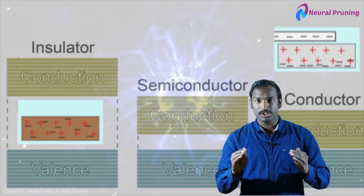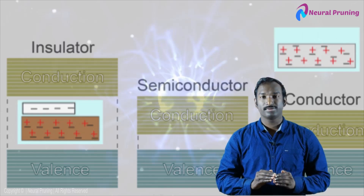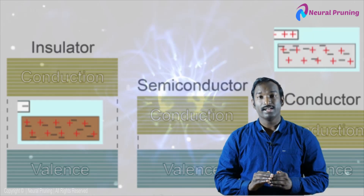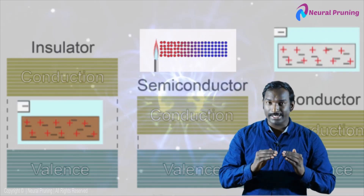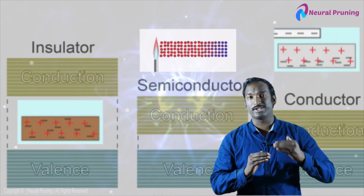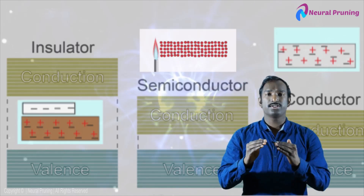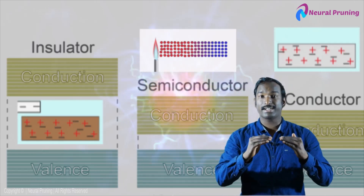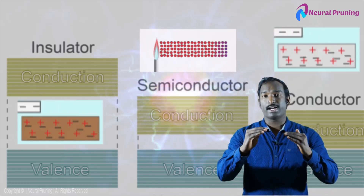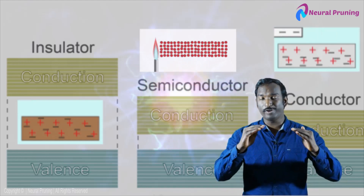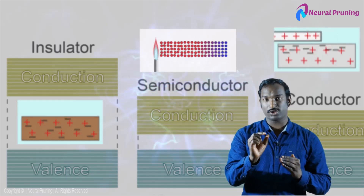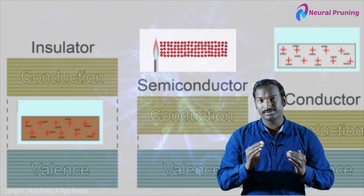An insulator has no free charge carriers and hence will never conduct electricity. A semiconductor has both conductor and insulator properties — it depends on temperature. If the temperature is very low, that material acts as an insulator because there are no free charge carriers. As temperature increases, the bond between the valence electrons breaks and it behaves as a conductor.